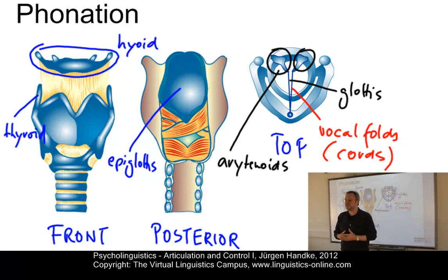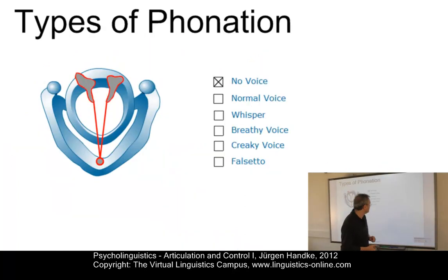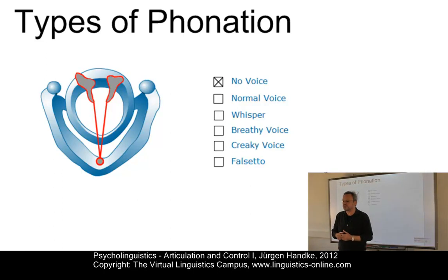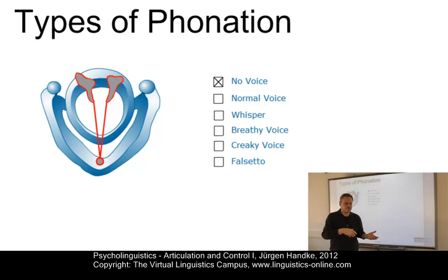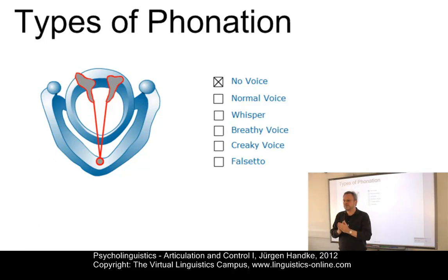In speech production, the larynx modifies the airflow from the lungs in such a way as to produce an acoustic signal. The results are various types of phonation. The most important effect for speech is the production of an audible vibration — a buzzing sound known as voice. Each pulse of vibration of the glottis, of the vocal folds, represents a single sound. The number of cycles per second depends on age and sex. Average male voices vibrate at around 120 to 180 cycles per second. Women's voices average 220 cycles per second — so 220 times the vocal chords come together on average in women's voices.